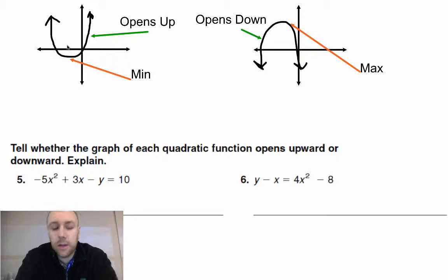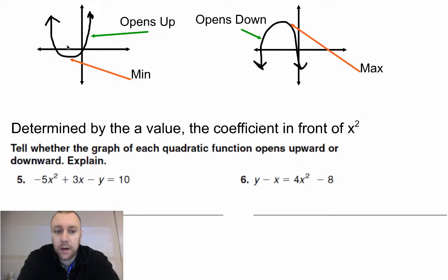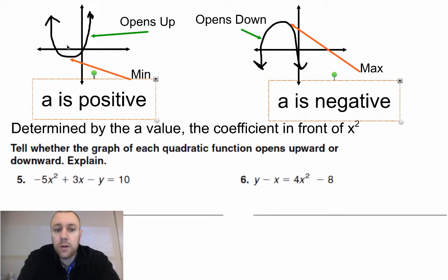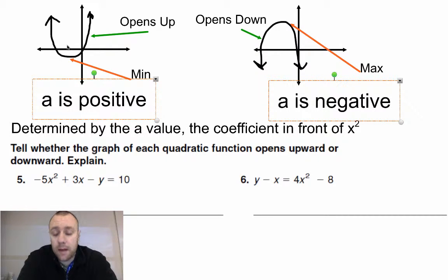To tell this we actually look at the a value. To determine if it opens up or down we look at the a value — the a value is the coefficient, or the number in front of the x squared. So if a is positive it has a minimum value, and if a is negative it has a maximum value.